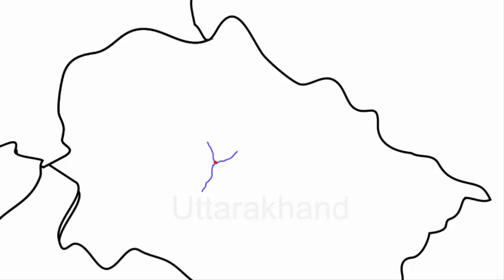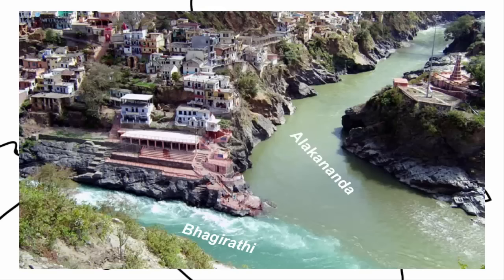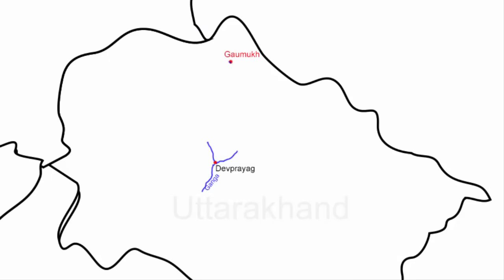Let's begin. First we will look at the river Ganga. Ganga actually starts from a place called Devprayag. At Devprayag, the two rivers — river Bhagirathi and river Alakananda — join, and that's how river Ganga is born. River Bhagirathi originates from a place called Gaumukh, which is the Gangotri glacier in Uttarkashi district of the state of Uttarakhand.